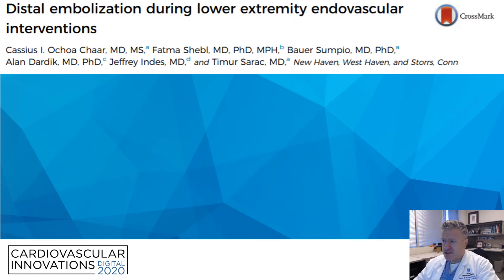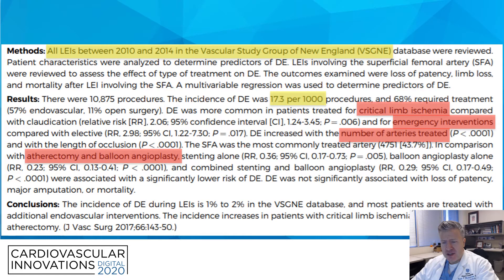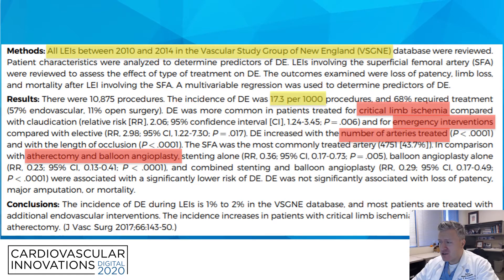Distal embolization is a feared, dreaded complication of lower extremity endovascular interventions. The VSG&E network described all lower extremity interventions between 2010 and 2014 and reported an incidence of distal embolization of 17.3 events per 1,000 procedures, roughly 1.7%. Critical limb ischemia, emergency interventions, an increased number of arteries treated, and performance of atherectomy were all associated with increased frequency of distal embolization events.